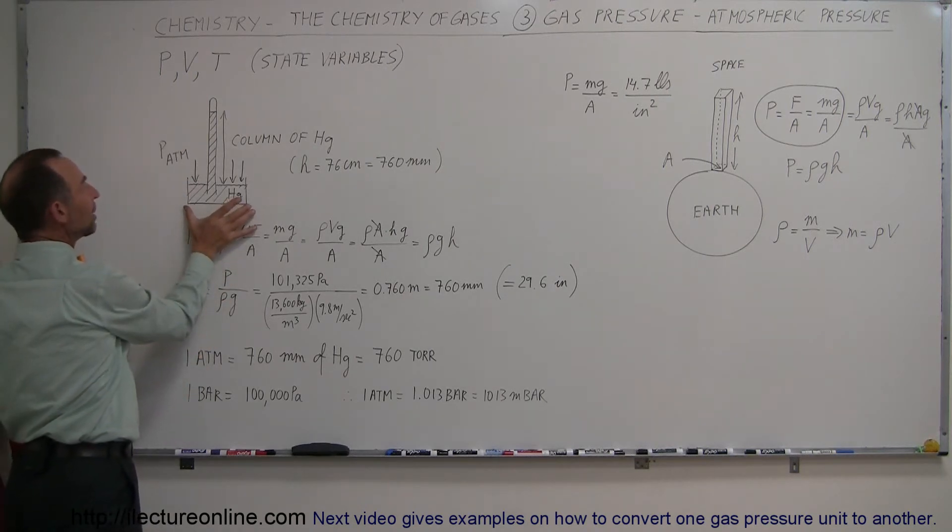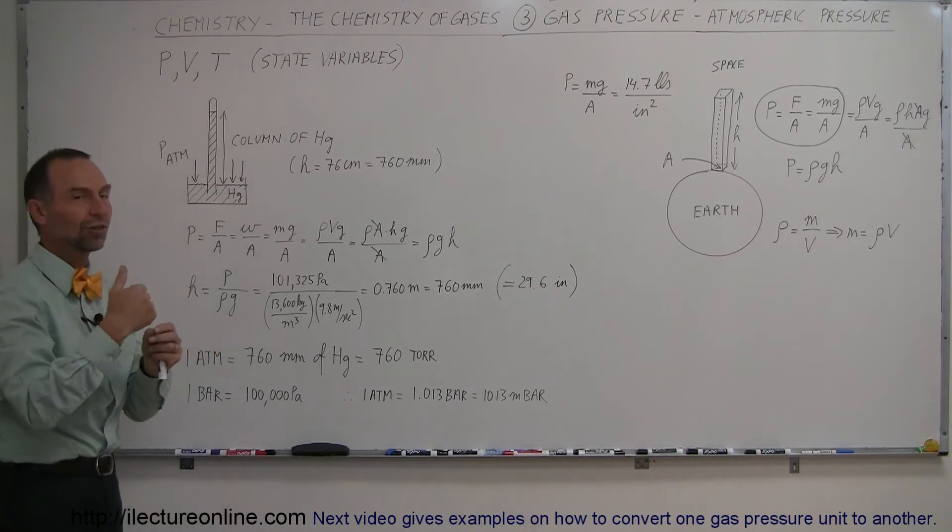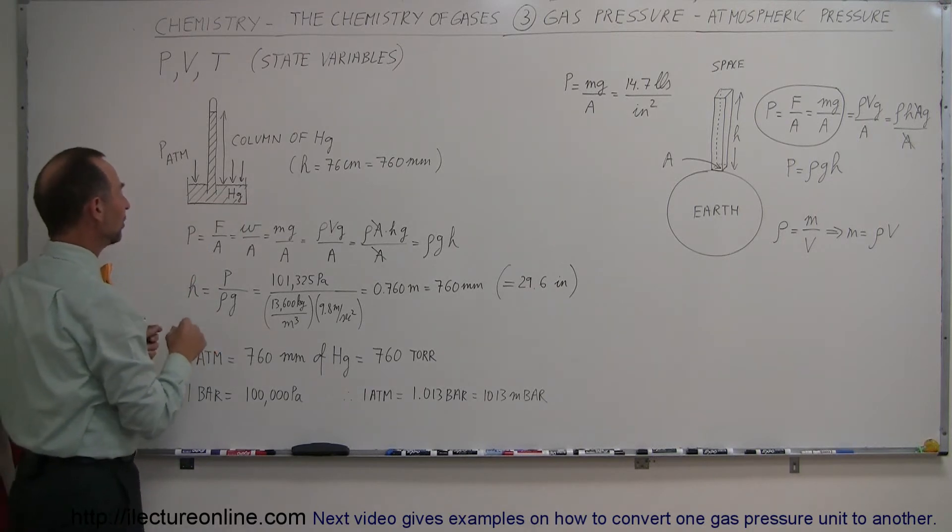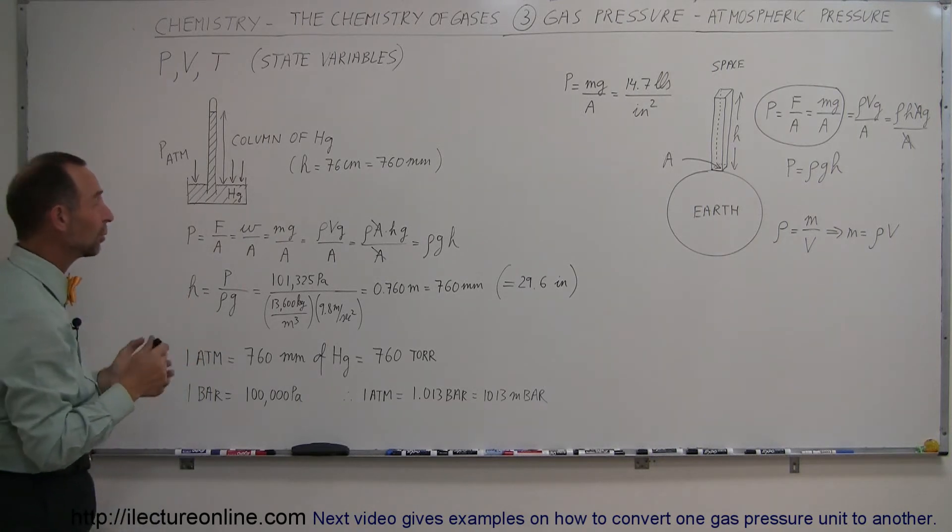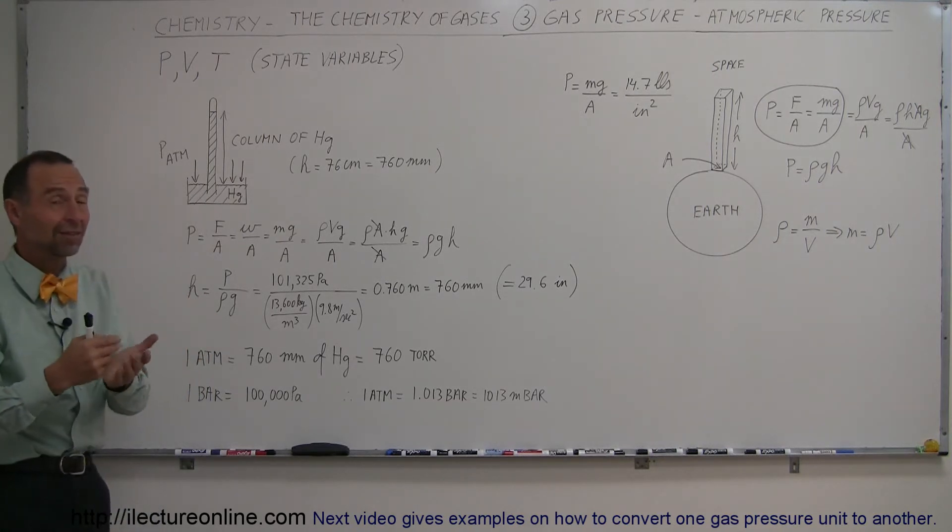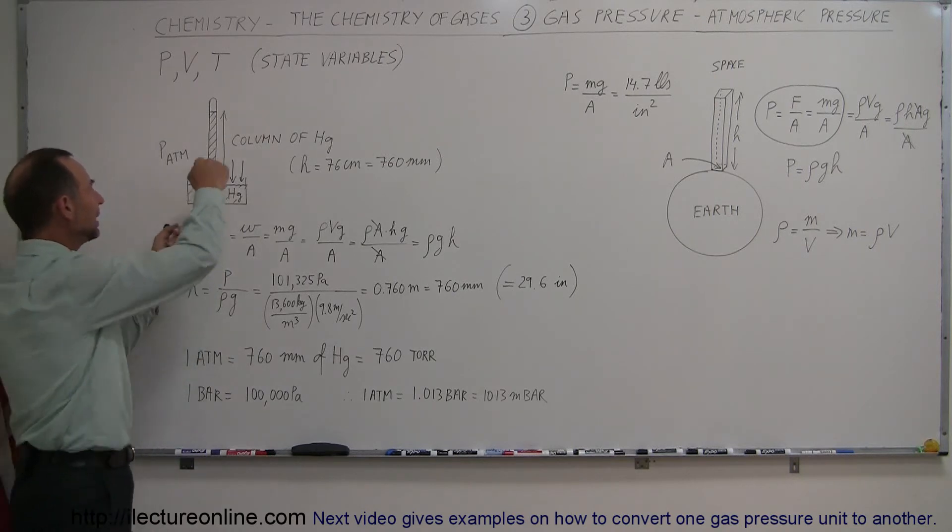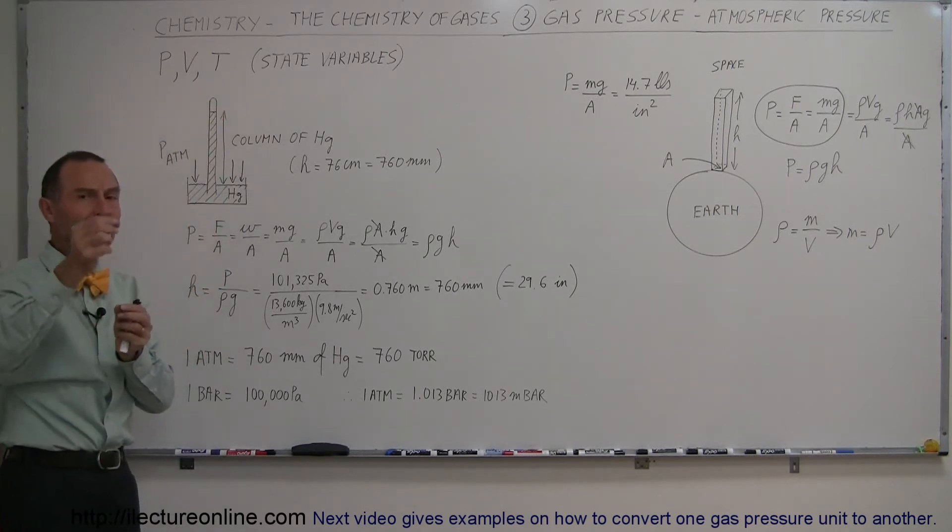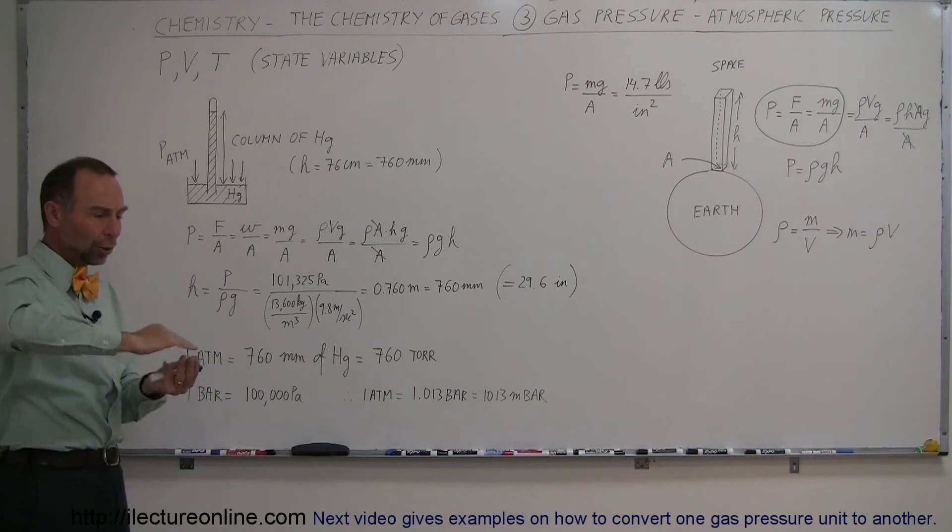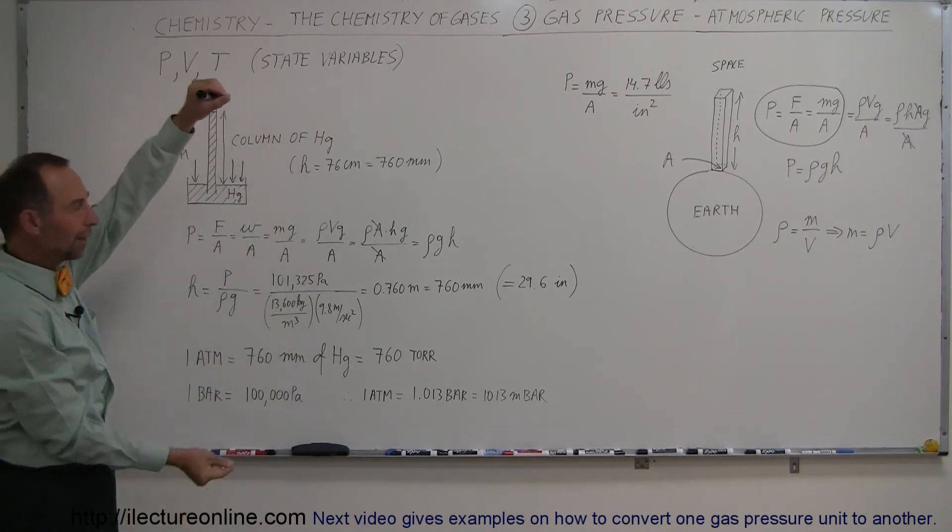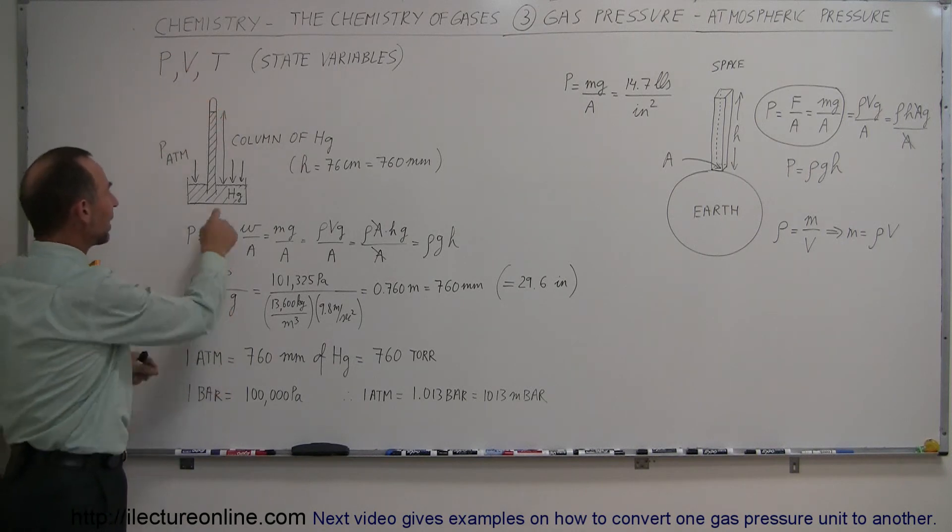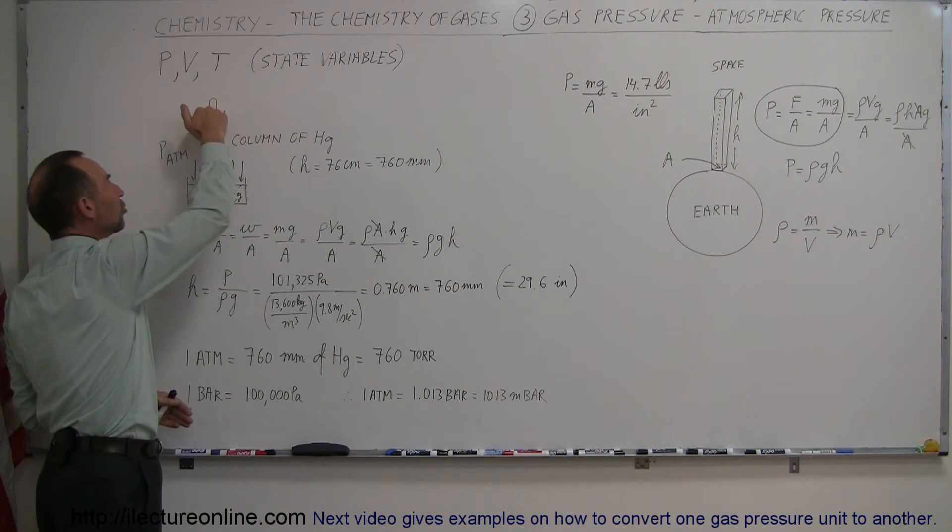He took a small little beaker of mercury. Mercury, of course, is liquid at room temperature. It's also very, very dense. It has a density of 13.6 grams per cubic centimeter, which is 13.6 times the density of water. He then took a long glass tube and he filled it with mercury all the way to the very edge. He then put his finger on it, turned that tube around and stuck it upside down in that little bath of mercury. And then he allowed the mercury column to drop and it would drop to a certain point and stop.